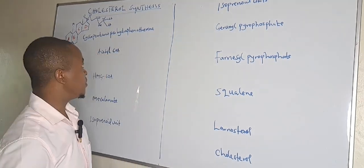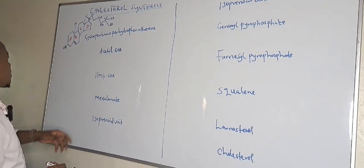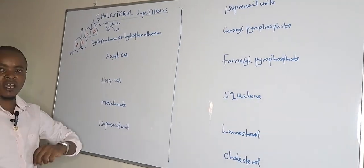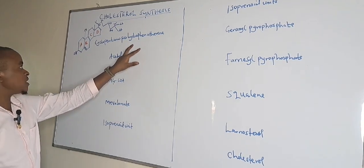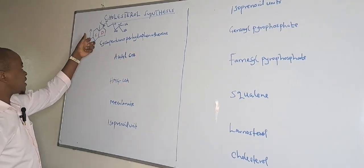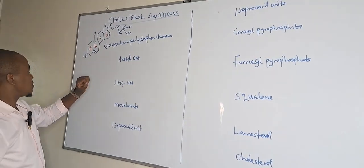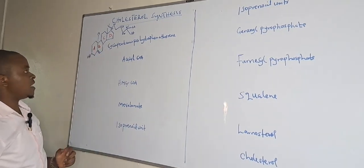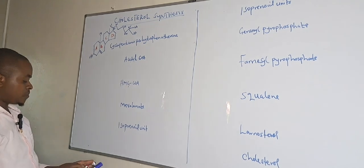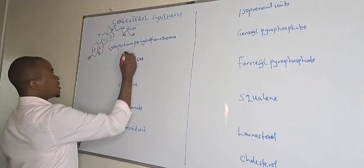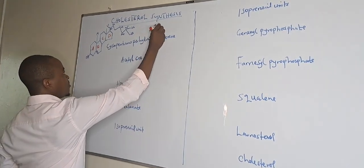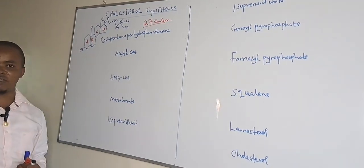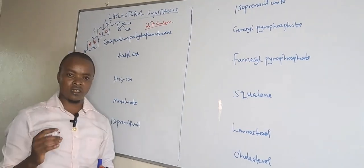This cholesterol — its scientific name is known as cyclopentanoperhydrophenanthrene — which is made up of four cyclic rings, and it is made up of 27 carbons. So cholesterol is made up of 27 carbon units. We want to see how we form these 27 carbon units in cholesterol.